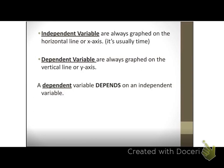The last two things we're going to talk about are the independent and dependent variable. The independent variable is always graphed on the horizontal line or the x-axis, which means most of the time our independent variable is the x variable. A lot of times, time is our independent variable. The dependent variable is always graphed on the vertical line or the y-axis. It's called dependent because it depends on the independent variable — it will change as my independent variable changes.